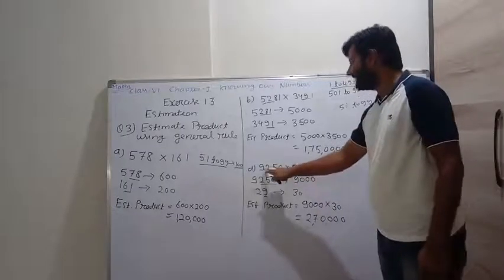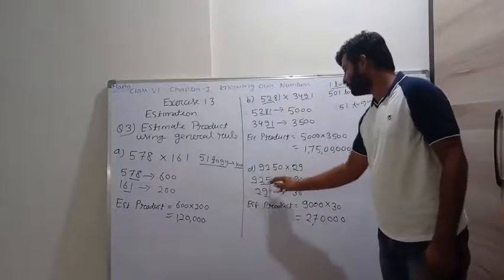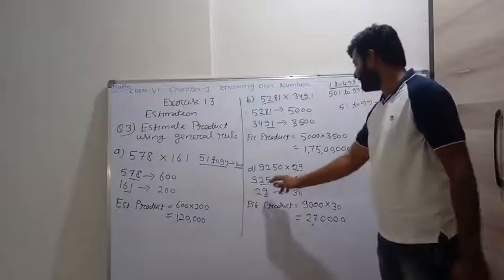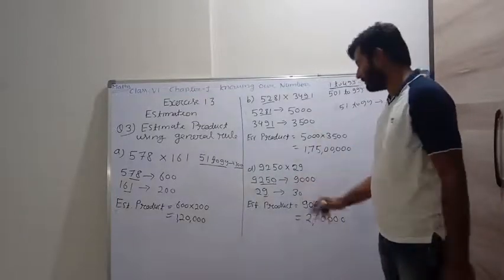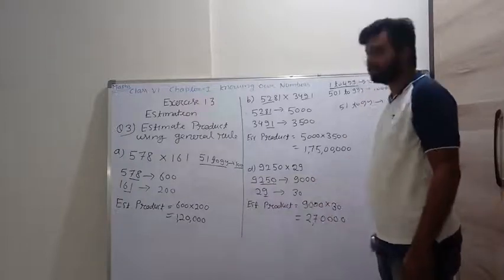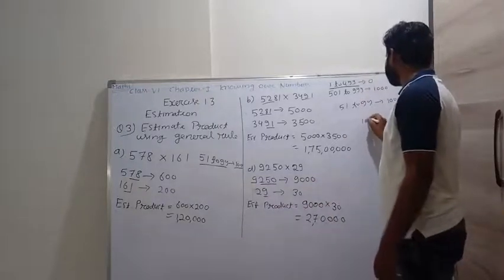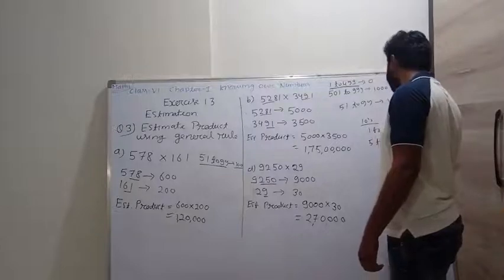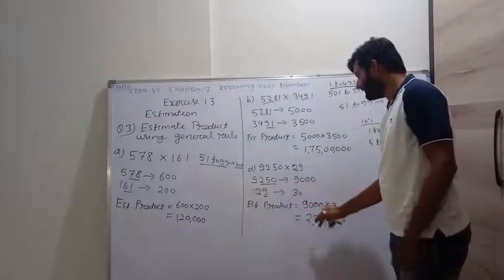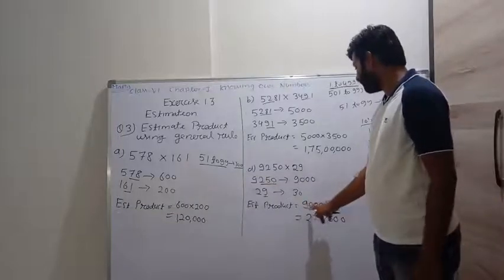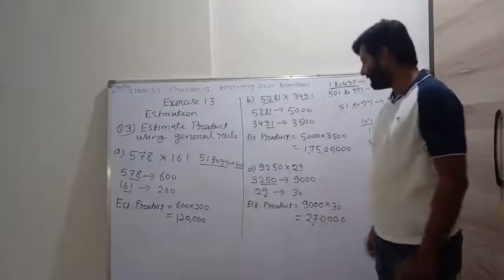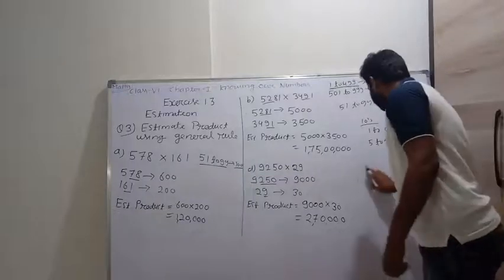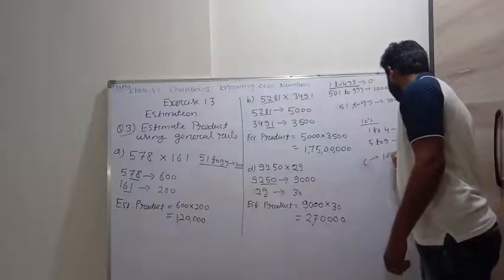Part D: 9,250 into 29. For 9,250: here 250 lies between 1 to 499, so 9,250 becomes 9,000. For 29, we take it as 10-plus: 1 to 4 is treated as 0, and 5 to 9 is treated as 10. Here 9 becomes 10, so 29 becomes 30. The estimated product is 9,000 into 30, giving 2,70,000. C is homework for you.